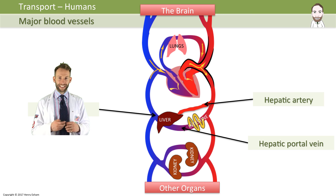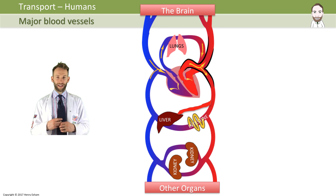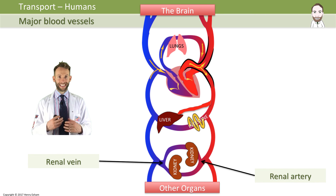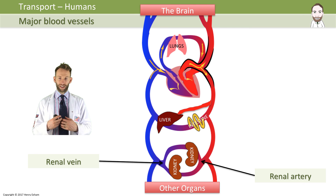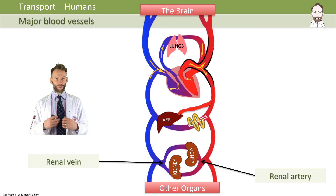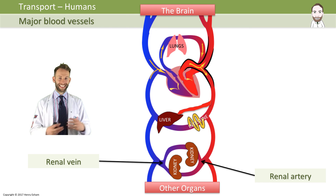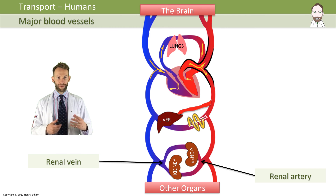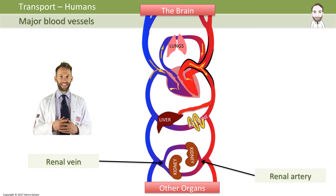The kidneys are supplied by the renal artery — anything to do with the kidney is renal. The renal artery supplies the kidneys, and the renal veins carry the deoxygenated blood back to the heart after it leaves the kidneys.